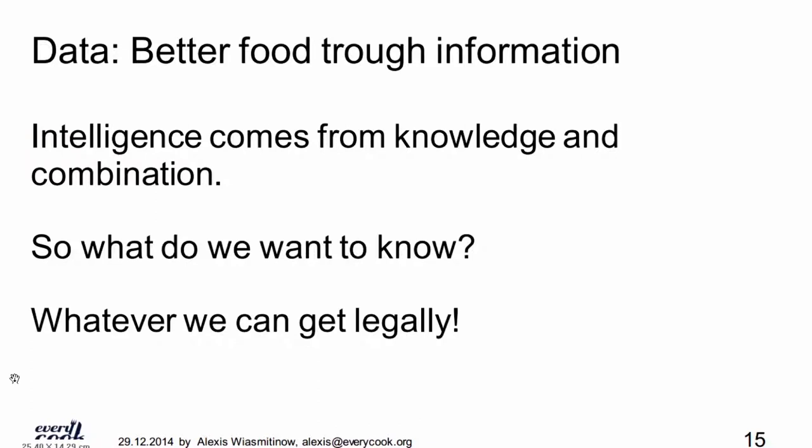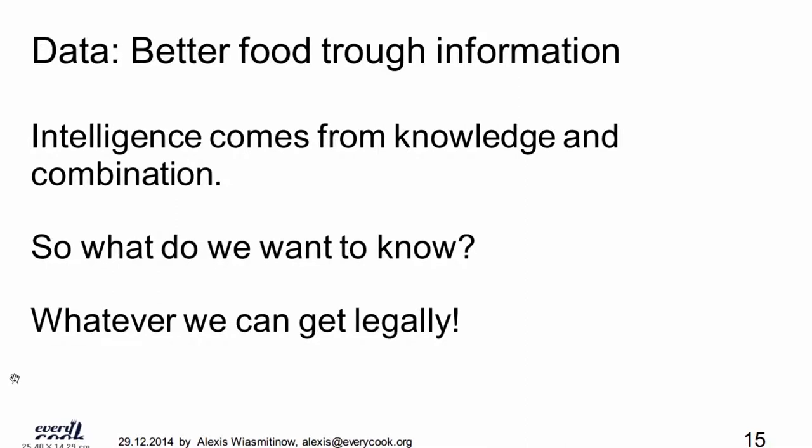We want all data we can legally obtain, and there's a lot of it. Machine-readable recipes for every step. We want to control pressure and temperature — we can't change both simultaneously. We need the ingredient list, the RPM values. And we also want to allow interrupted, intermittent stirring to be possible.